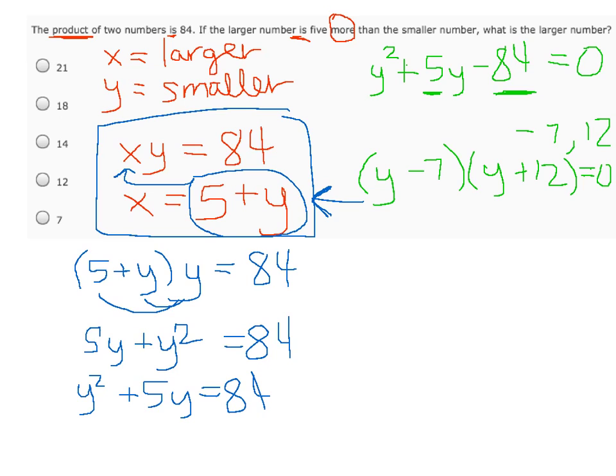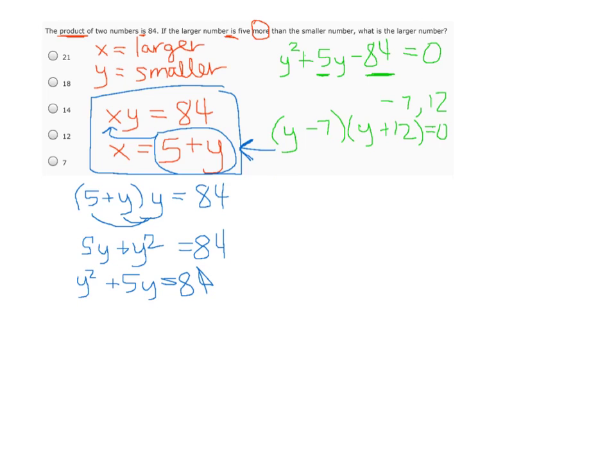Now we want to solve for y, so we set each of these equal to zero. We have y minus 7 equals zero, so we add 7 to each side, so y equals 7. And y plus 12 equals zero. Subtract 12 from each side to get y equals negative 12.